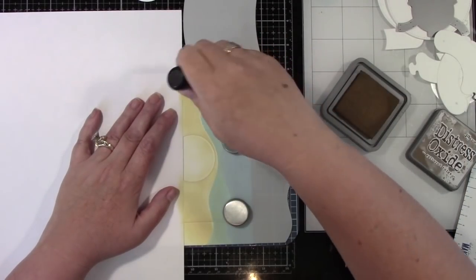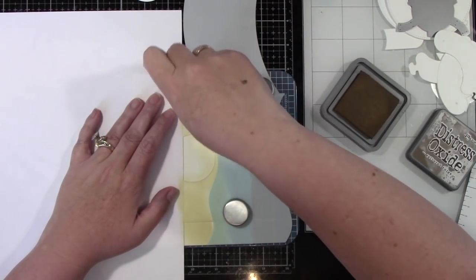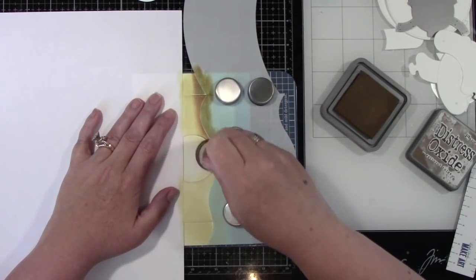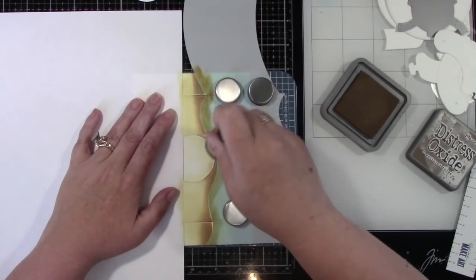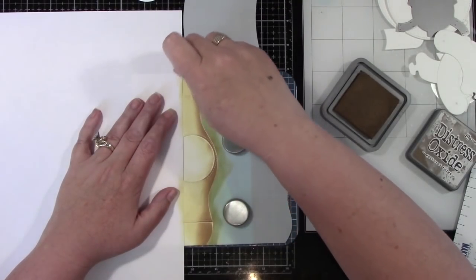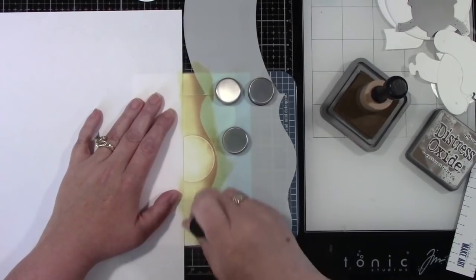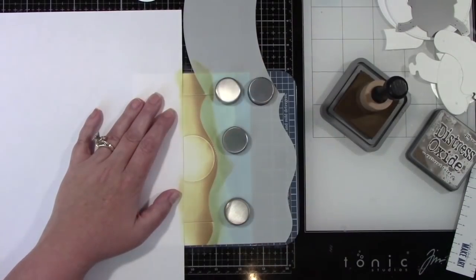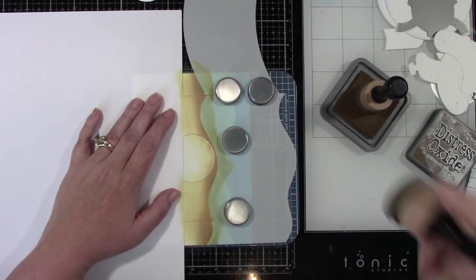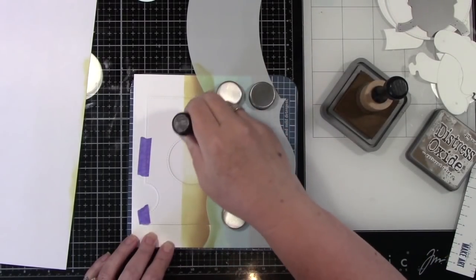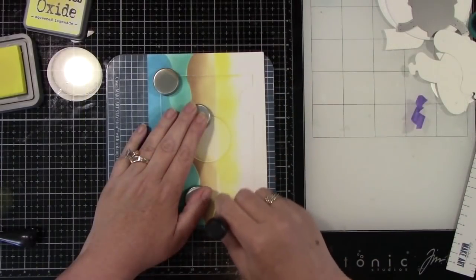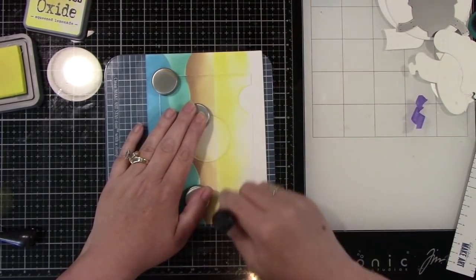So now I'm going to come in with the gathered twigs and add just a darker part of the sand where it's meeting the water and then I'm going to blend those two together. And again, I'm just using this white piece of paper as a mask. Again, you could use low tack tape. So now I'm just going to blend those two colors together and that turned out beautiful.